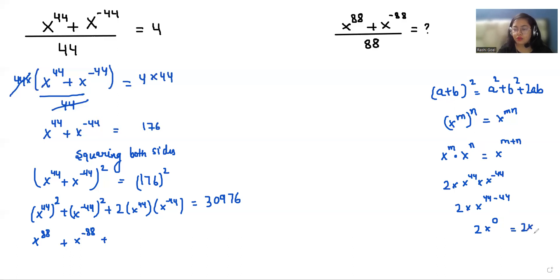So 2 times 1 is 2, so we can replace it directly with 2. This equals 30976.